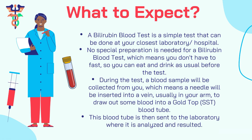Before we get into the specifics of the bilirubin blood test itself, let's talk about what you can expect when your doctor orders this blood test. A bilirubin blood test is a simple test done at your closest laboratory or hospital. No special preparation is needed, which means you don't have to fast — you can eat and drink as usual before the test. A blood sample will be collected by inserting a needle into a vein, usually in your arm, to draw blood into a gold top or SST blood tube, which is then sent to the laboratory to be analysed and resulted.